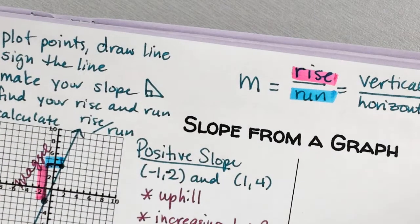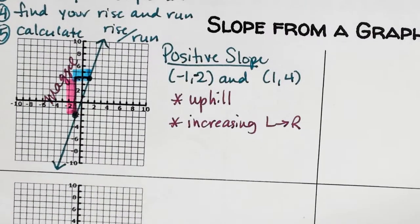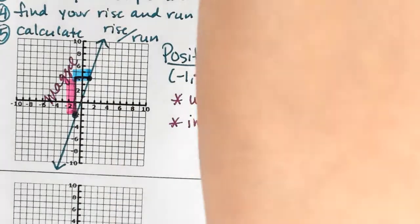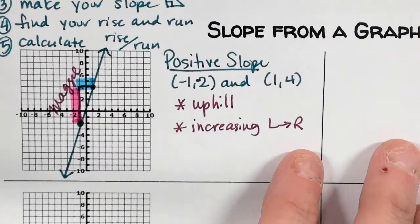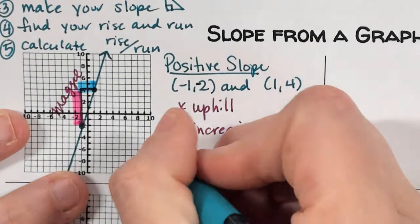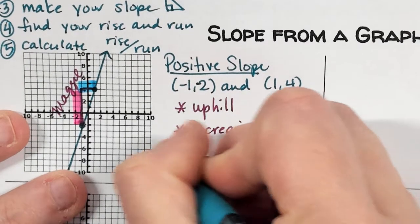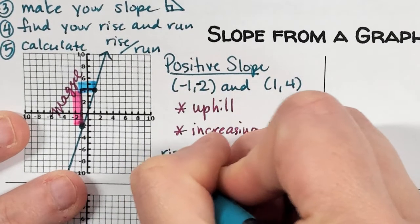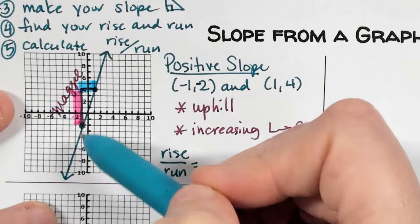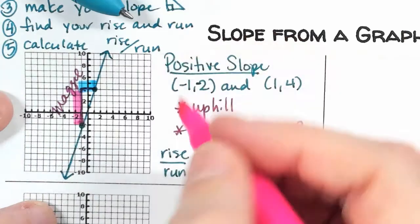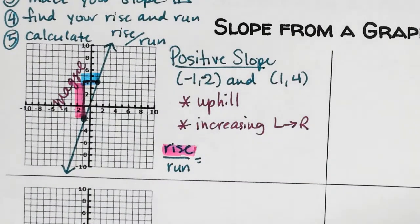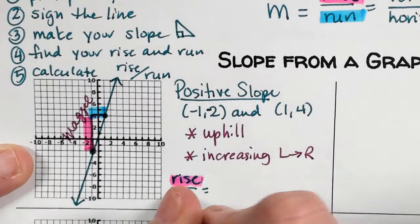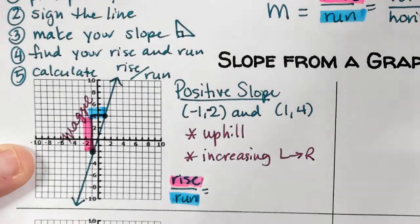I'm going to highlight the rise using pink, and the run in blue. You don't have to use the same colors as me — you just have to use the same ones every time. Now I need to identify my rise and run.